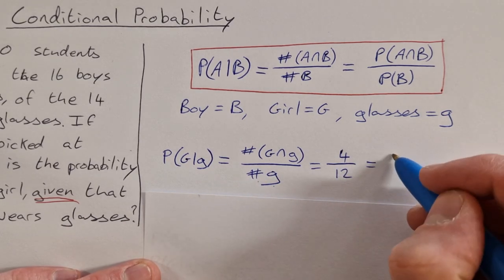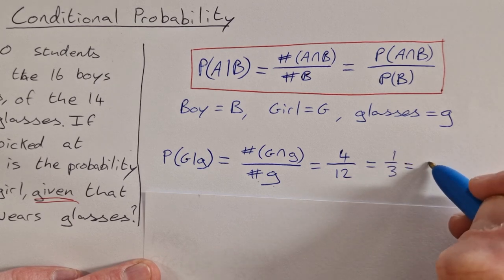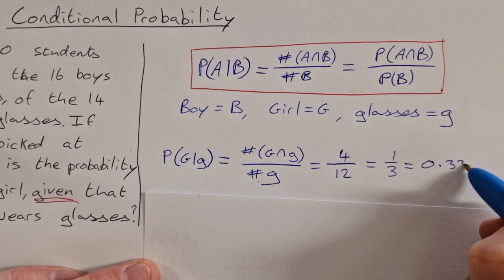4 over 12 will simplify down to one third, or as a decimal you can write it as 0.333 recurring.